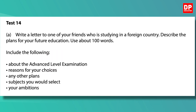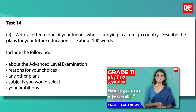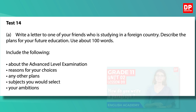The first option is a letter. Write a letter to one of your friends who is studying in a foreign country. Describe the plans for your future education. Use about 100 words. You are also asked to include these points — always look at the guidelines given. You can write a paragraph on each if you like. The guidelines are: about the advanced level examination, reasons for your choices, any other plans, subjects you would select, and your ambitions.